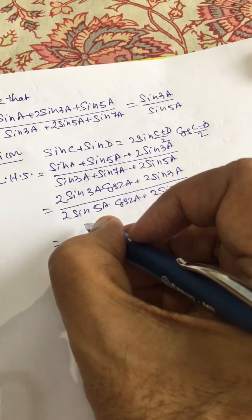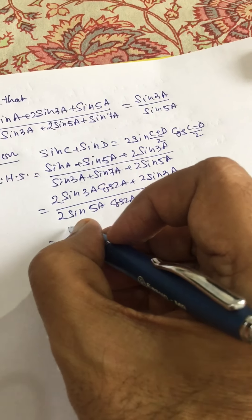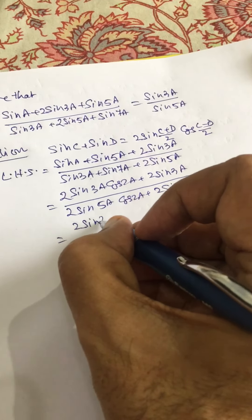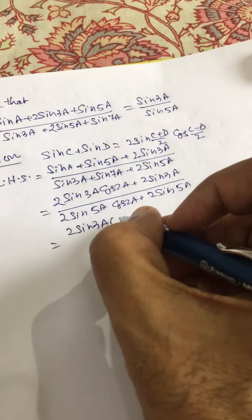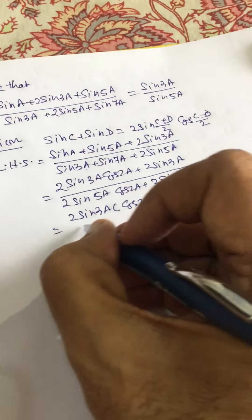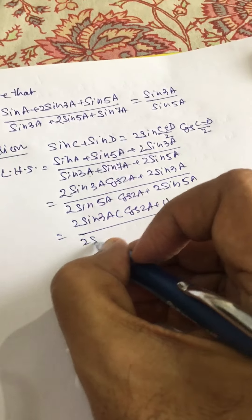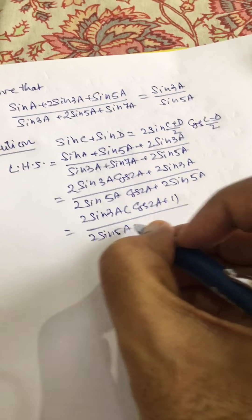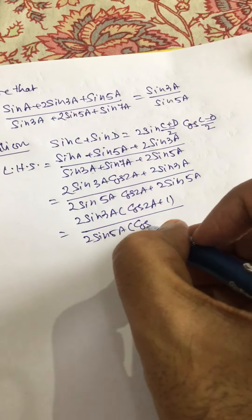Now we take 2 sin 3A common, this becomes cos 2A plus 1, and here we take 2 sin 5A common, this becomes cos 2A plus 1.